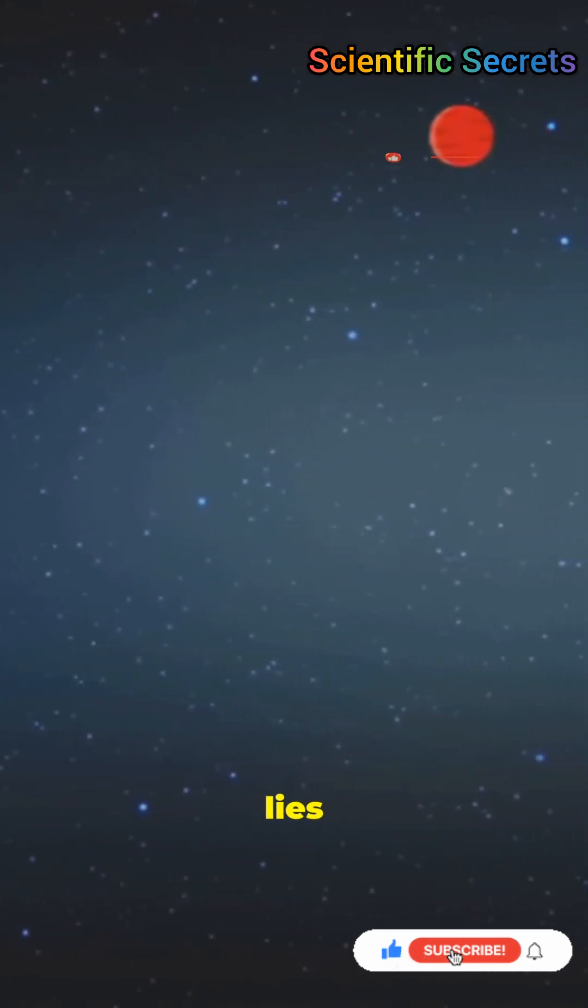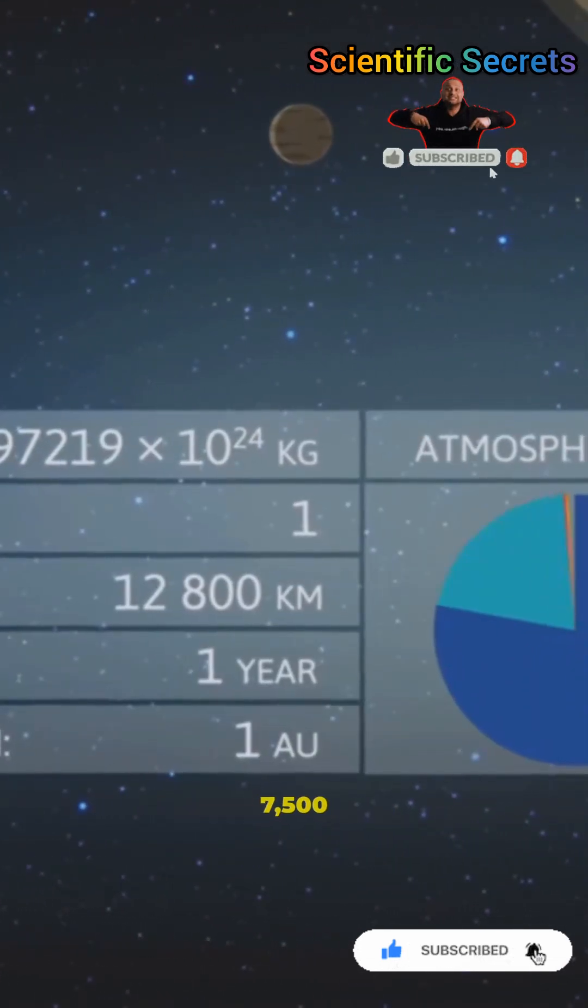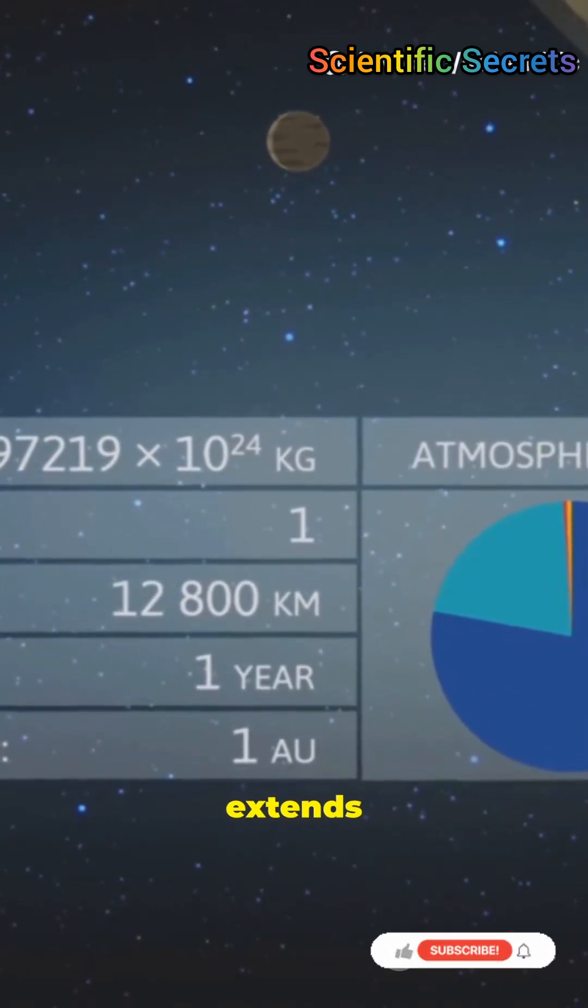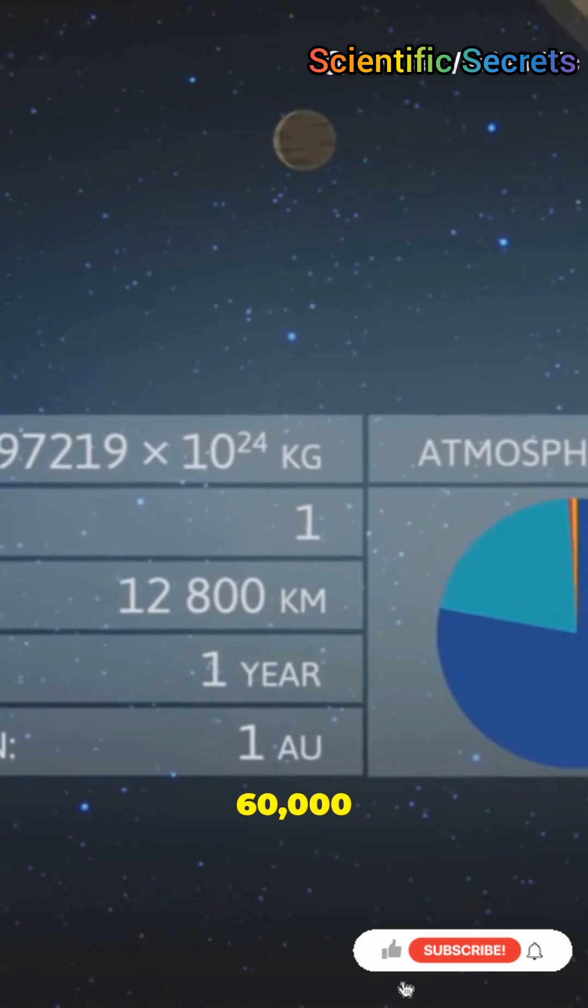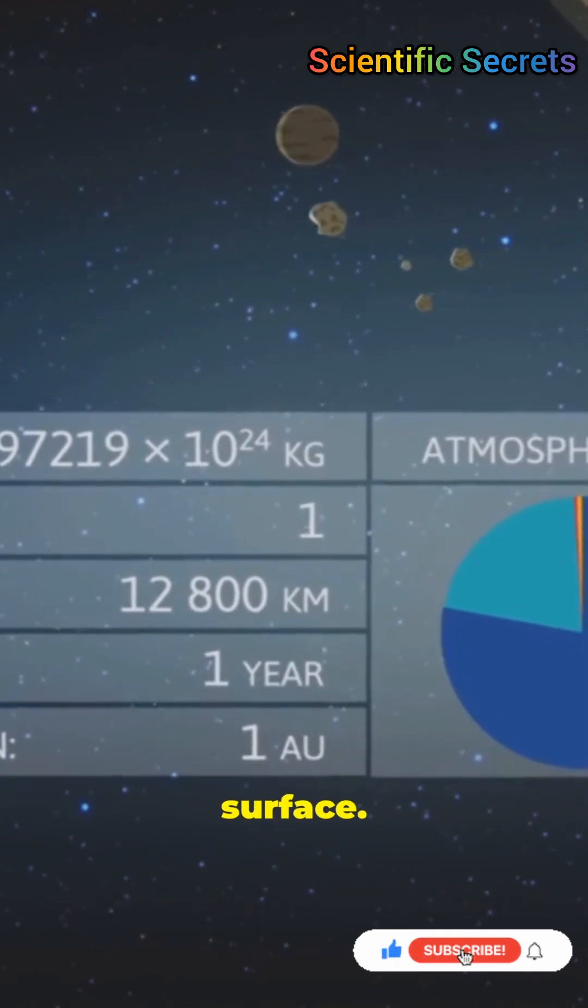The inner belt lies between 1,000 and 12,000 kilometers, 620 to 7,500 miles, above the Earth's surface. The outer belt extends from about 13,000 to 60,000 kilometers, 8,000 to 37,000 miles, above the surface.